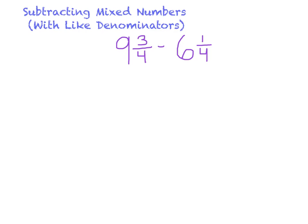What I like to do first is line up my mixed numbers. I want to make sure that my fractions are lined up with my fractions and my whole numbers are lined up with my whole numbers. And then I subtract starting with my fractions. 3/4 minus 1/4 is 2/4.